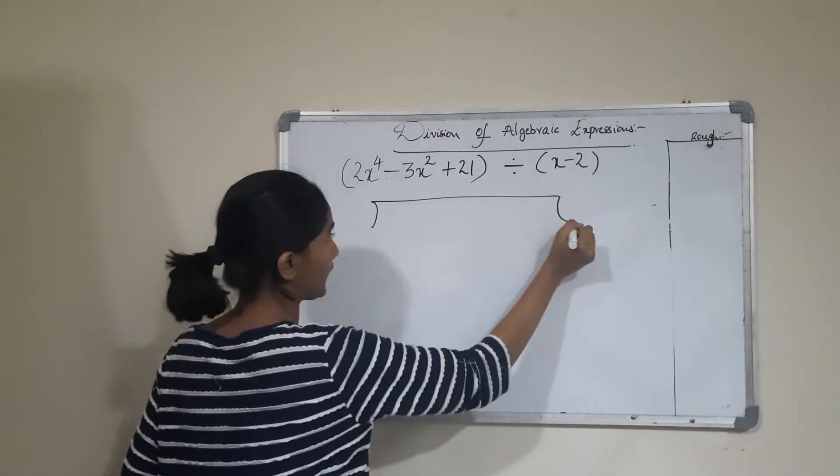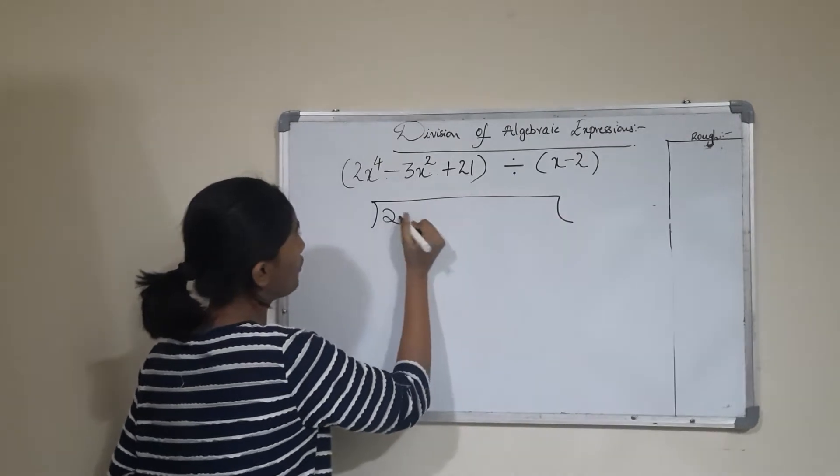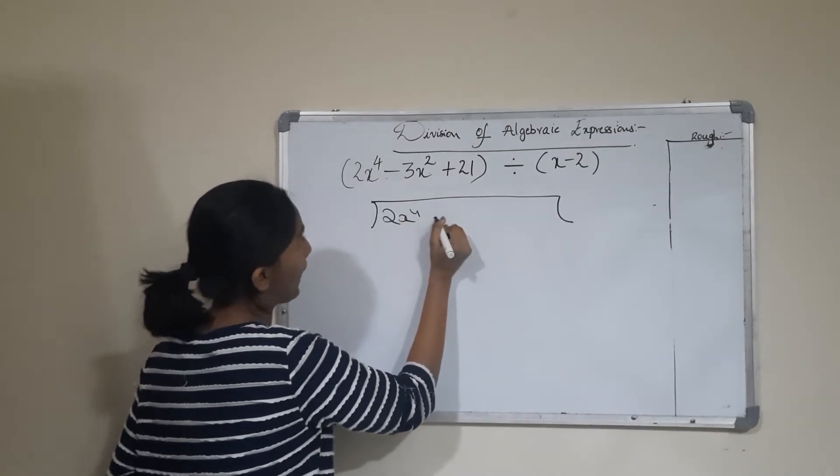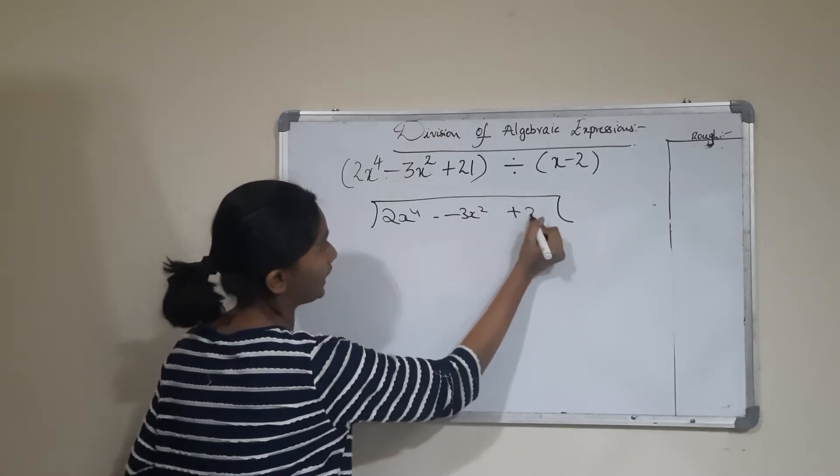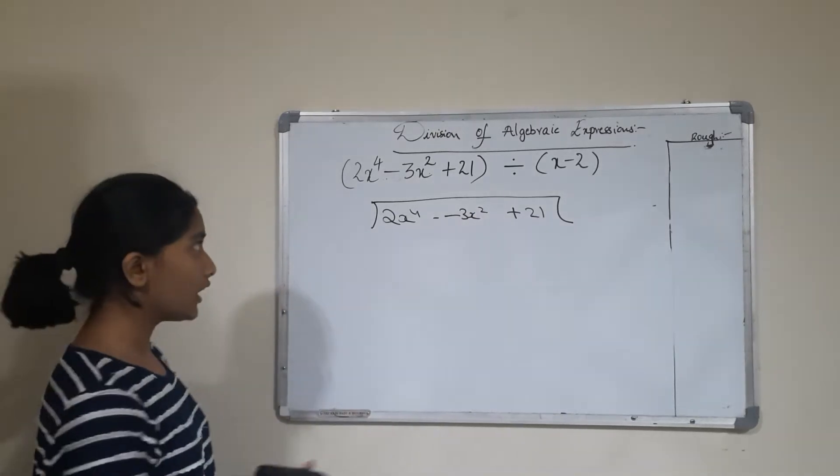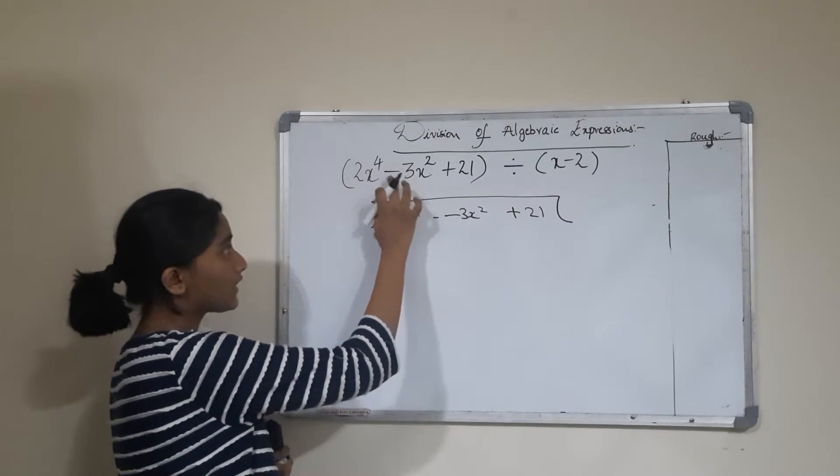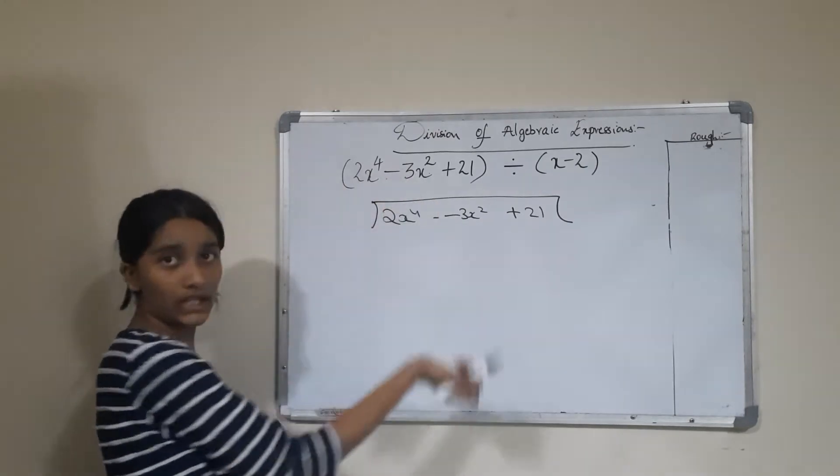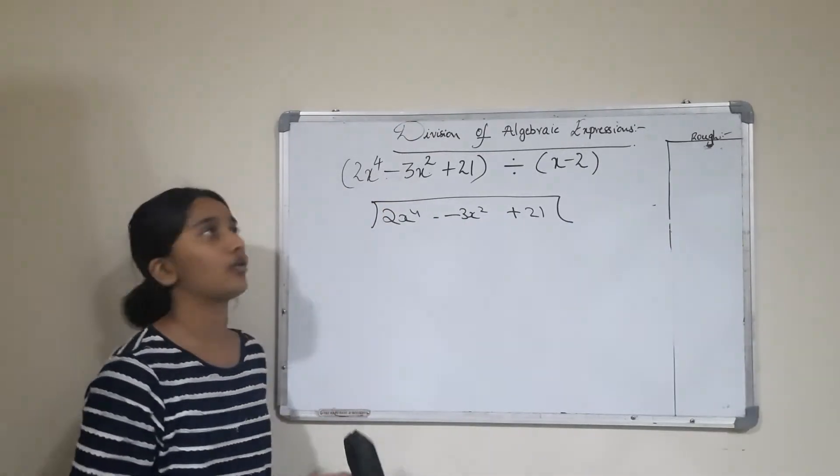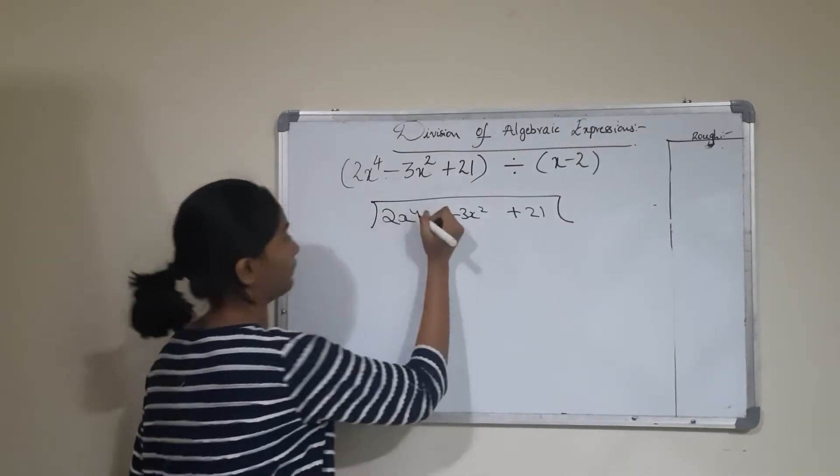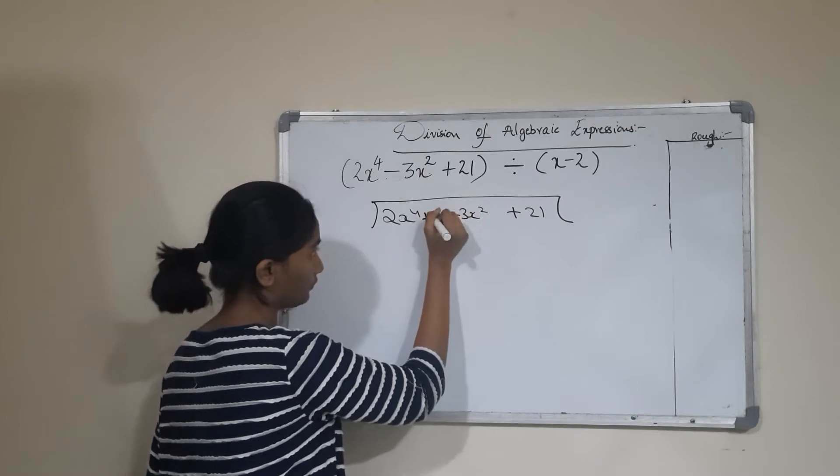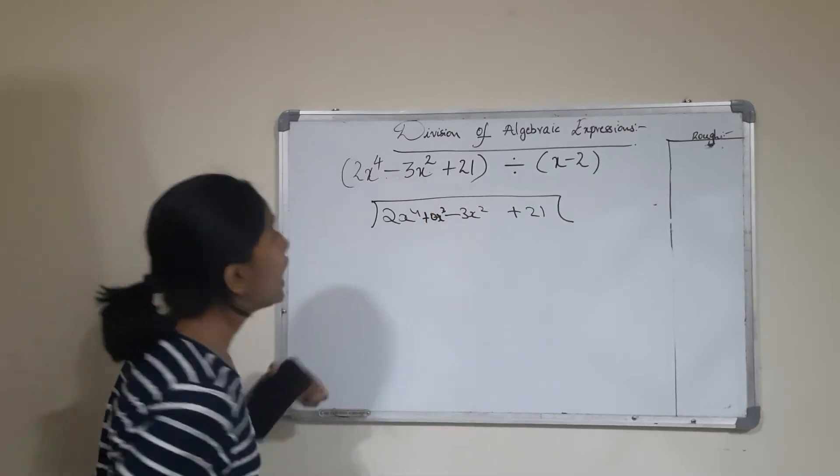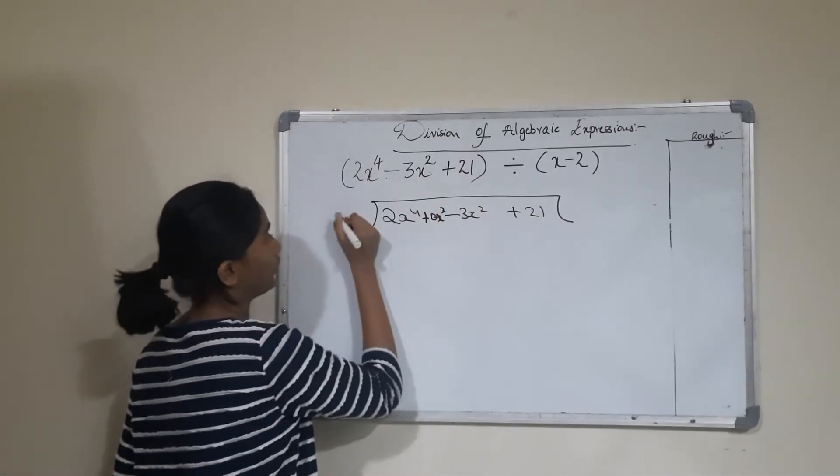I'm writing the problem: (2x^4 - 3x^2 + 21) ÷ (x - 2). You can see the x^3 term is missing, so we'll add 0x^3 here, right after 2x^4. Now let's solve it.